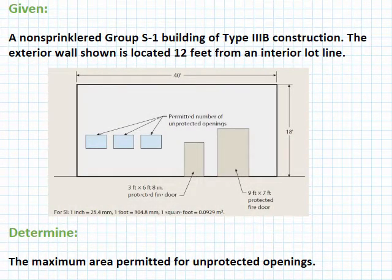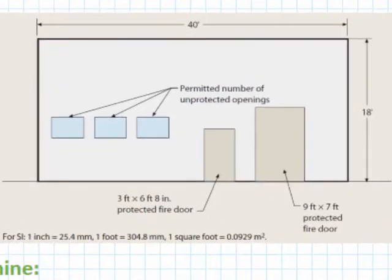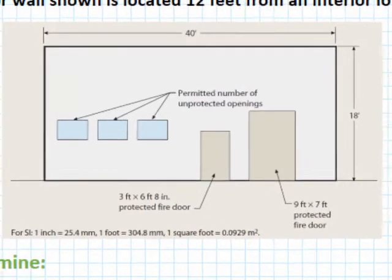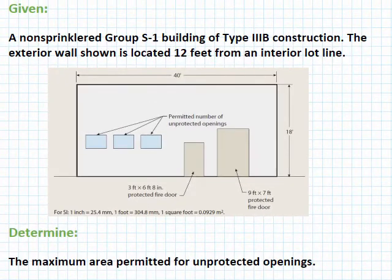This is application example 705-1 in the 2015 International Building Code Illustrated Handbook. The problem statement gives the following: a non-sprinkled Group S1 building of Type 3B construction has an exterior wall located 12 feet from an interior lot line. Determine the maximum area permitted for unprotected openings.